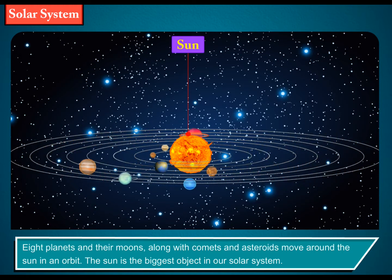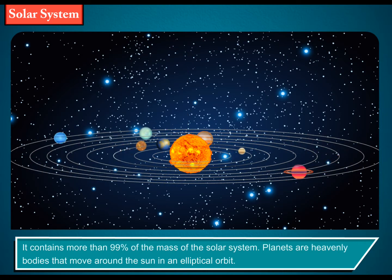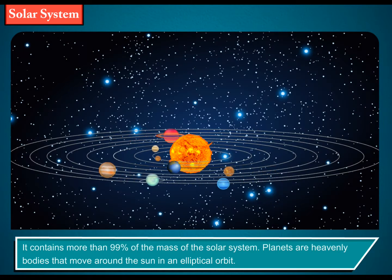The Sun is the biggest object in our solar system. It contains more than 99% of the mass of the solar system. Planets are heavenly bodies that move around the Sun in an elliptical orbit.